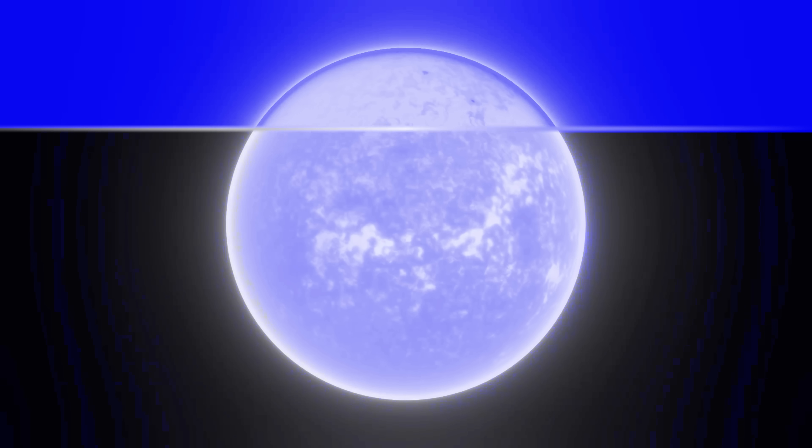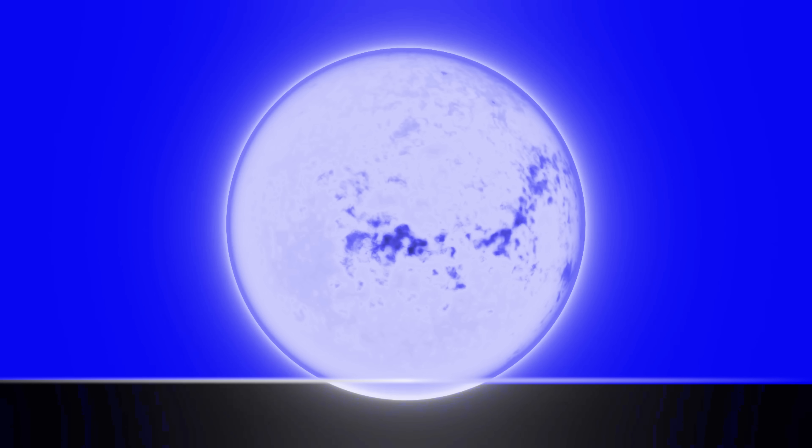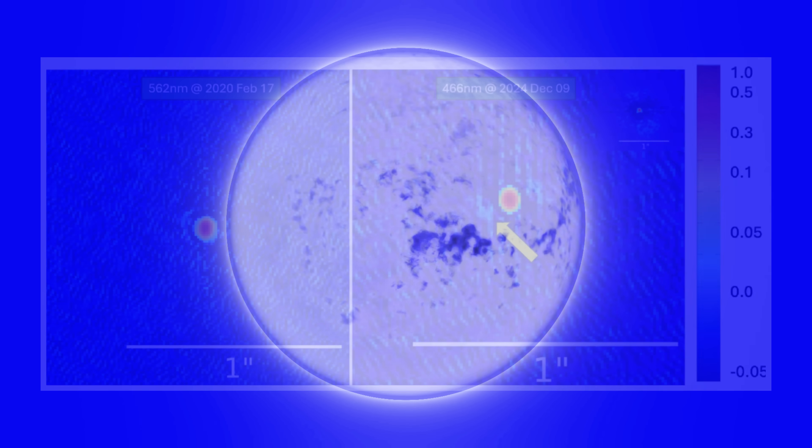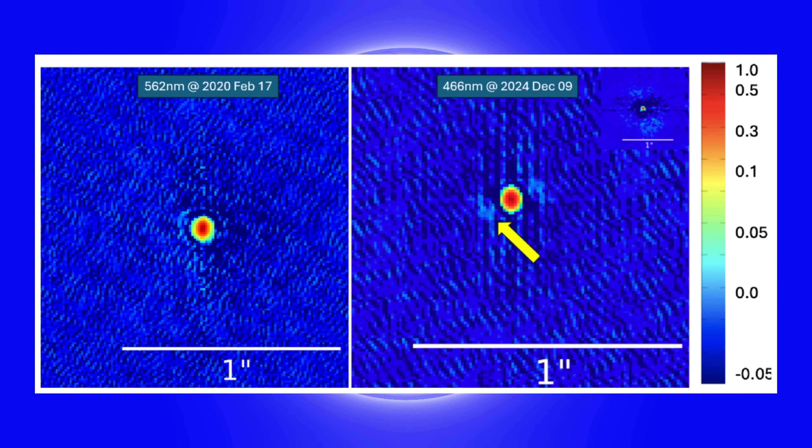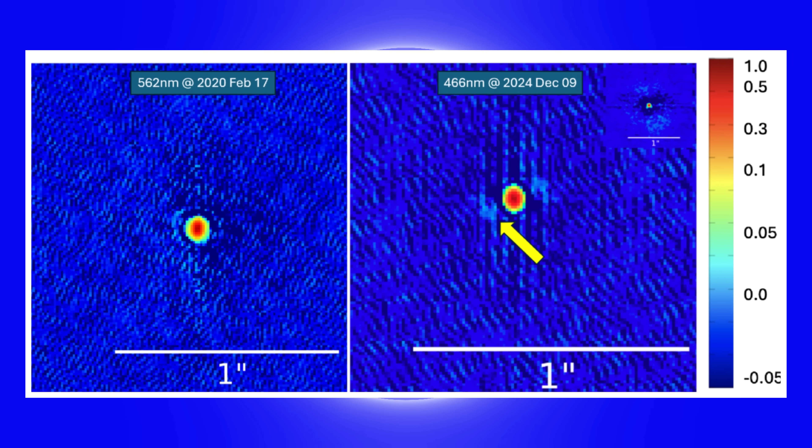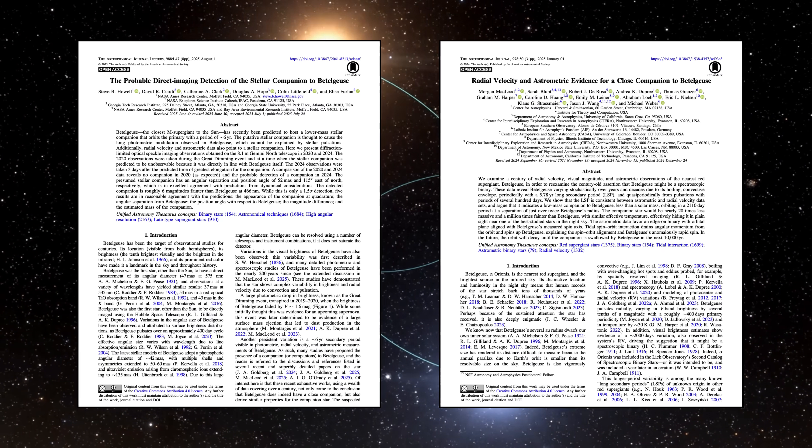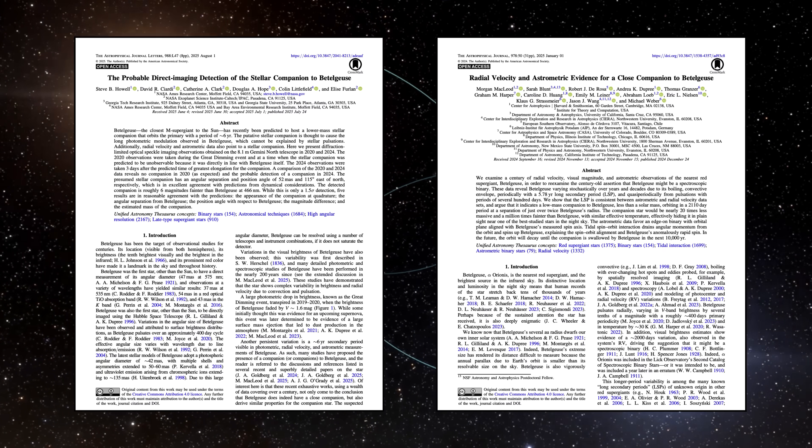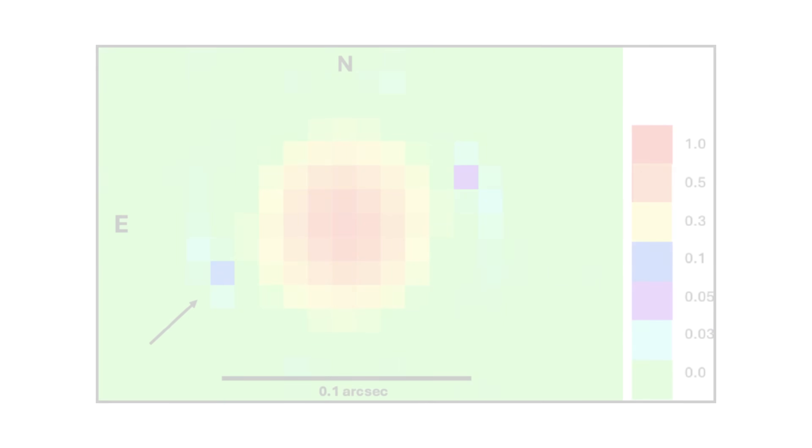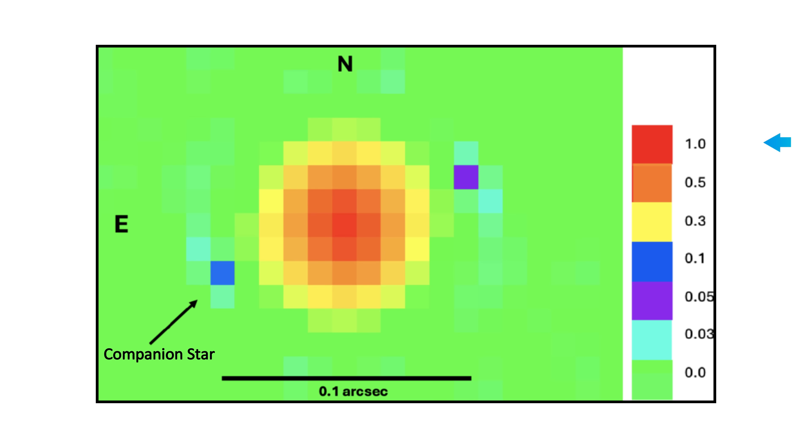Upon this discovery, Howell and his team analyzed the companion star's light to determine its characteristics. And what they found aligned perfectly with previous predictions for Betelgeuse. The study papers have been published in the Astrophysical Journal Letters and are linked in the description below. They found that the companion star is six magnitudes fainter than Betelgeuse in the optical wavelength range.